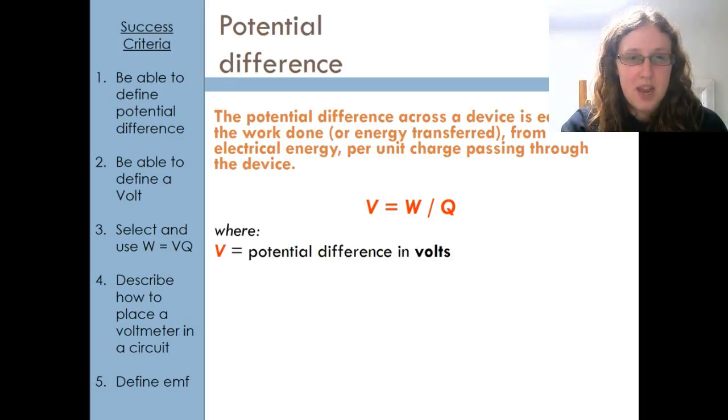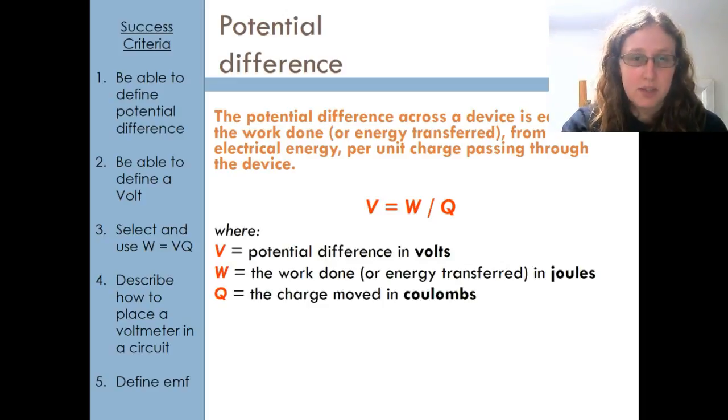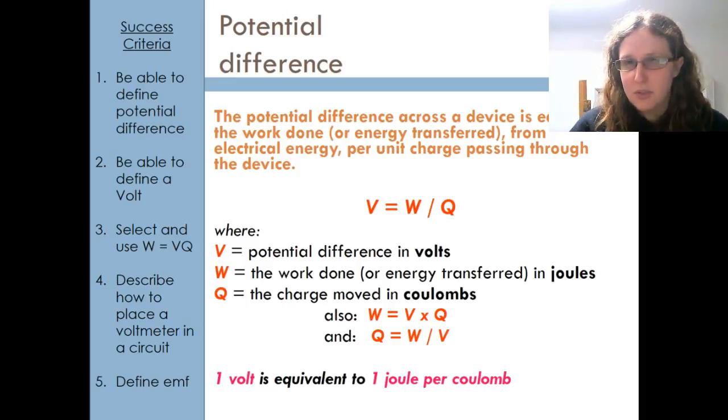So here V is potential difference in volts, W is the work done or energy transferred in joules, Q is the charge in coulombs. Obviously we can rearrange, go from one to the other.